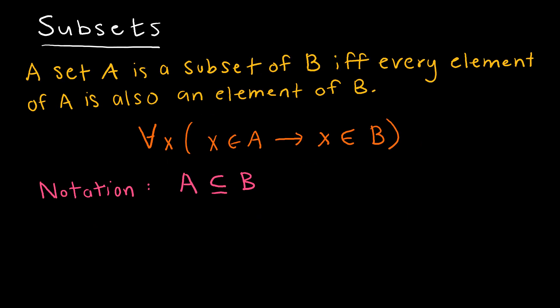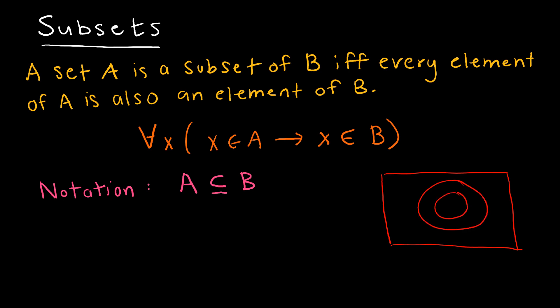Now let's talk about a subset. A set A is a subset of B if and only if every element of A is also an element of B. Looking at a Venn diagram, we have some universe, with set A contained inside set B, meaning anything in set A is also contained in set B. For example, A is {1, 2, 3} and B is {1, 2, 3, 4, 5}.